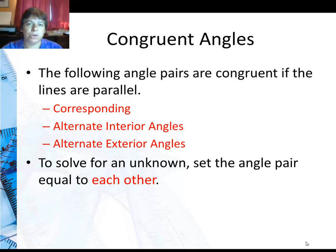So to solve for an unknown when you're dealing with this type of angle, set the angle pair equal to each other, the same way we did vertical angles, and then solve for the unknown variable.